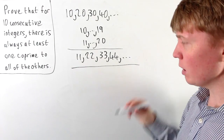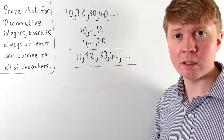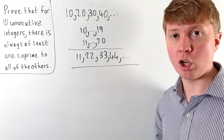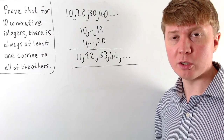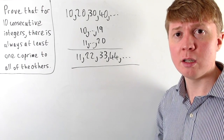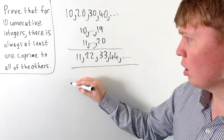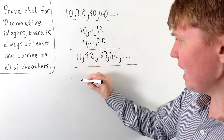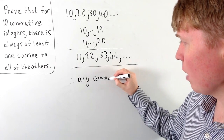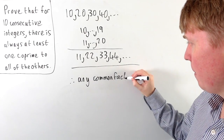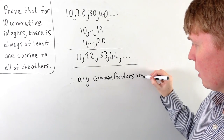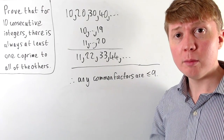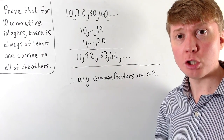So we can say the same for 12, 13, 14, 15 — actually any number greater than or equal to 10. We can't have that as a common factor, because the multiples of that number are just too far apart for our list of 10 consecutive integers.